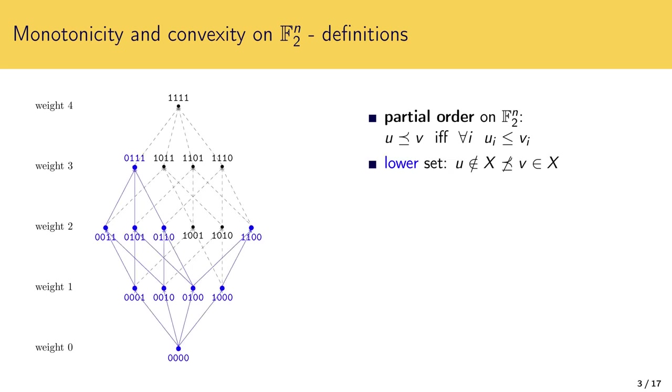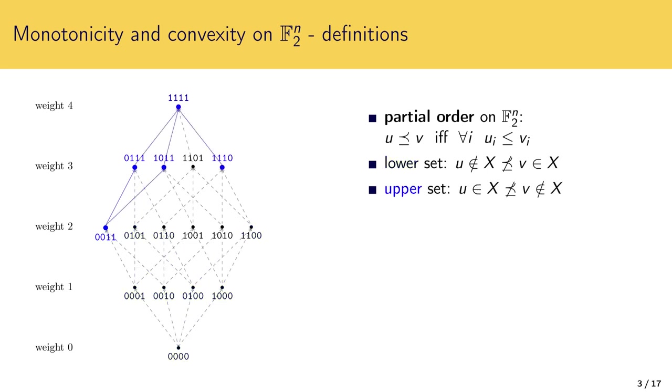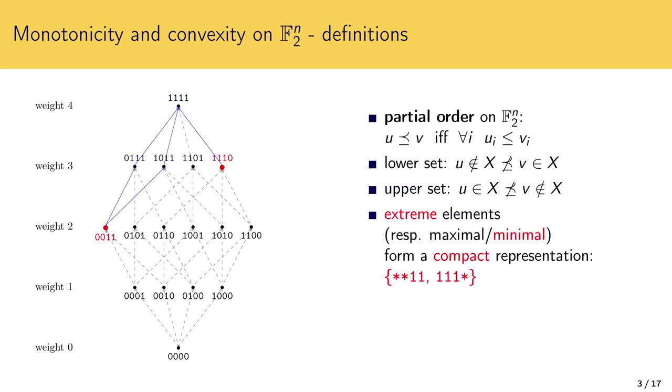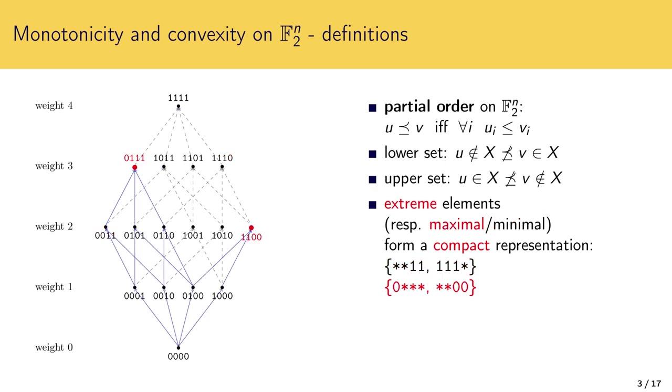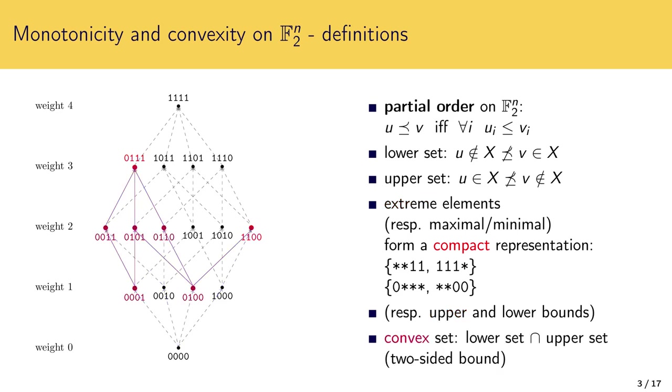Monotonicity and convexity are defined with respect to this partial order. A set is called a lower set if there are no edges going from a non-element to an element of the set. The upper set is defined analogously. Extreme elements which are maximal for the lower set and minimal for the upper set form a compact representation of monotone sets. For upper sets extreme elements can be viewed as patterns with wild cards and ones. For lower sets the patterns consist of wild cards and zeros. They can be seen as vectorial upper or lower bounds. A set is called convex if it has both lower and upper bounds. In other words it is an intersection of a lower set and an upper set.